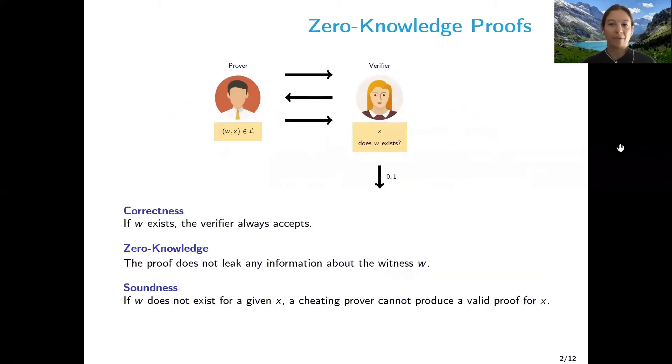The core of our paper are zero knowledge proofs, which are protocols between a prover and a verifier that allow the prover to prove that he knows a secret to the verifier without actually revealing the secret. For example, if we have a public instance X and language, then the prover could prove to the verifier that he knows a witness to the public instance without actually revealing the witness W.